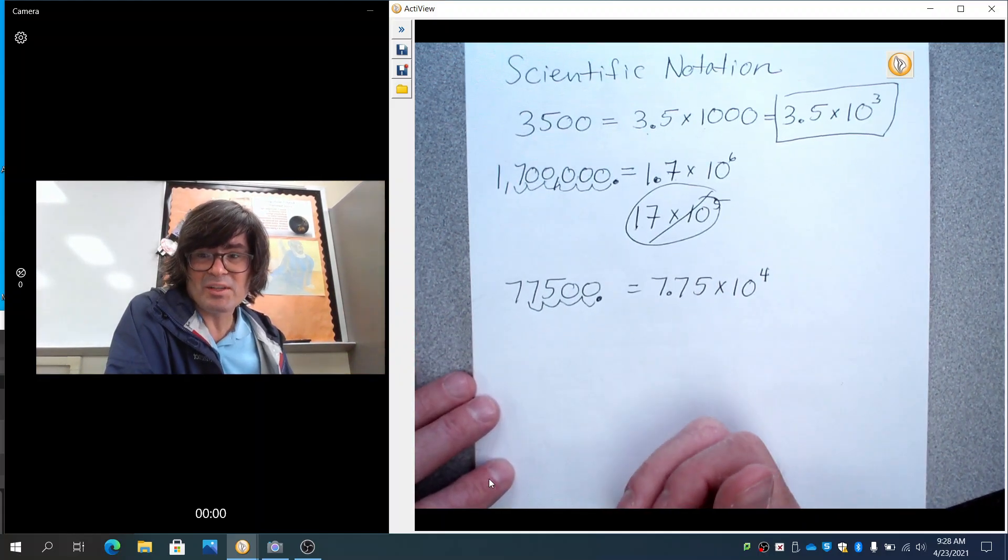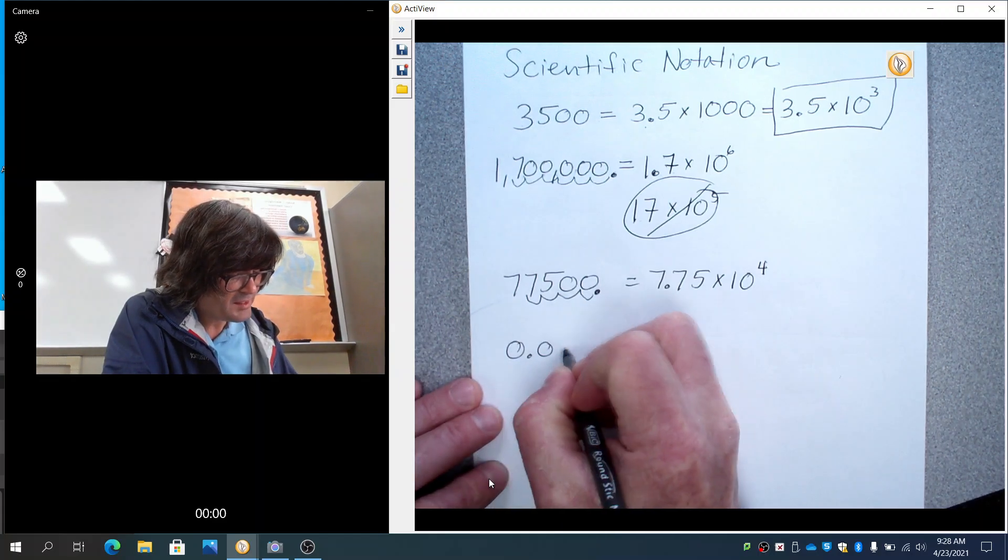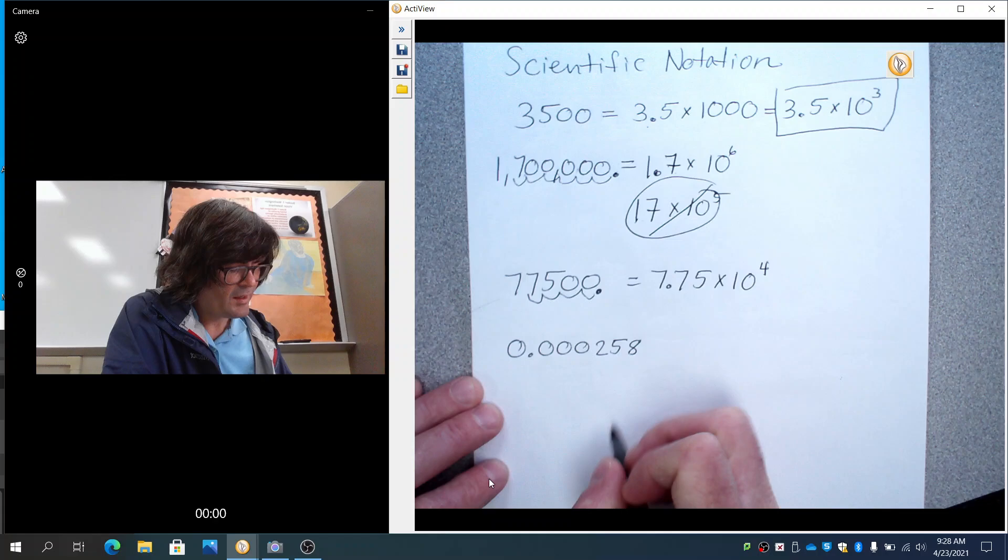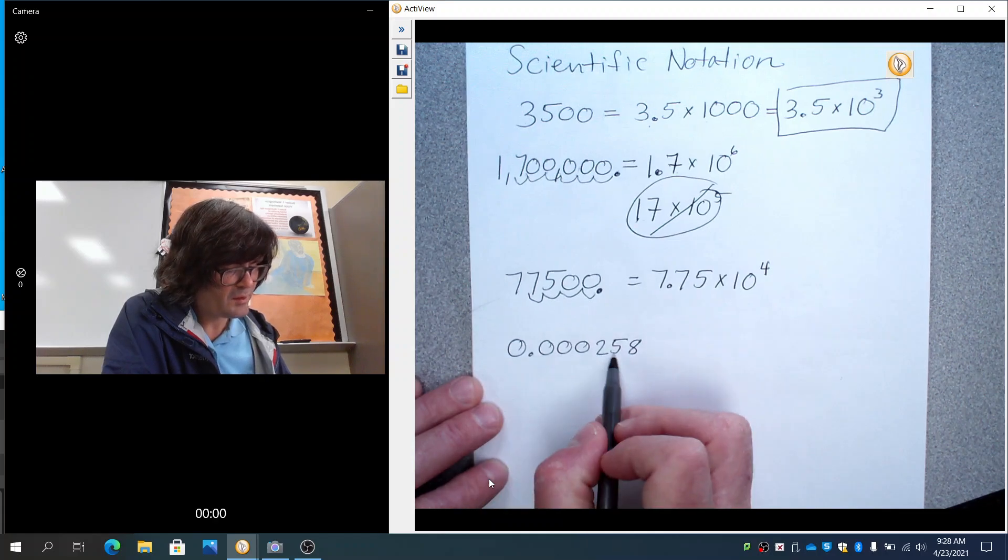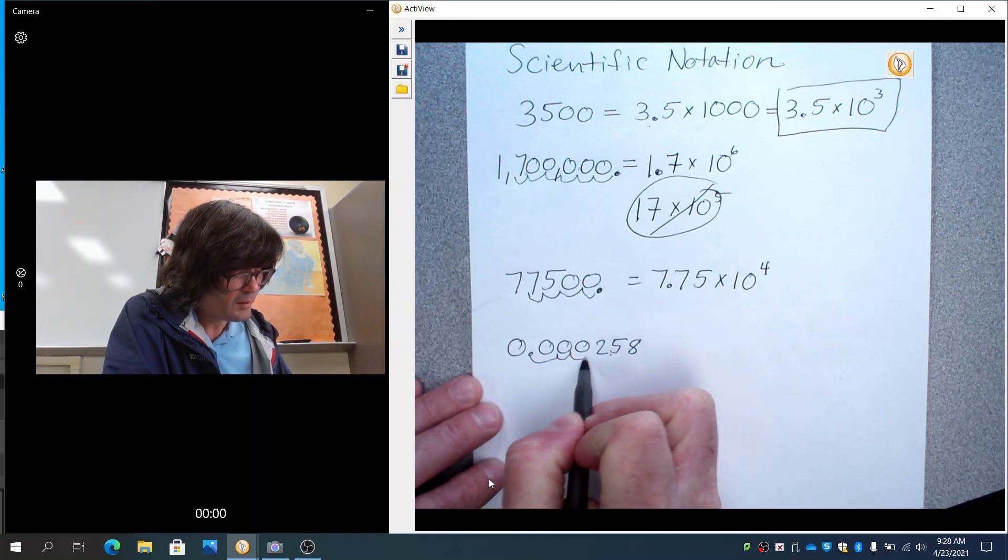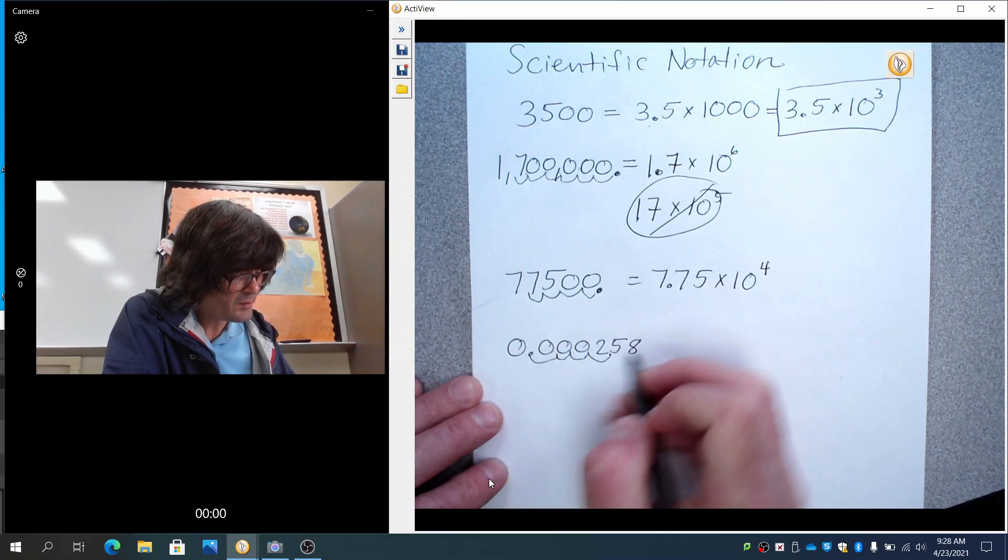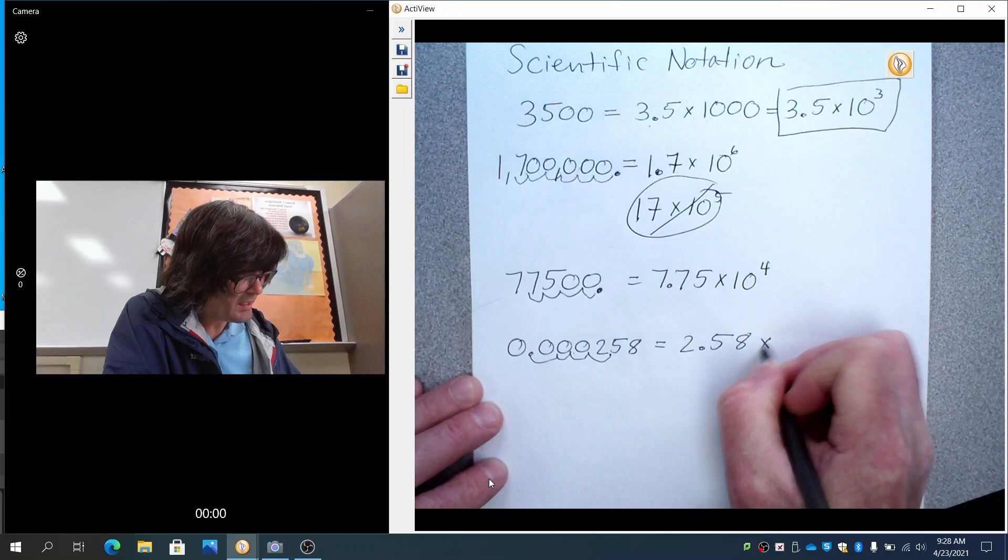Scientific notation can be used for really small numbers as well. For example, if you had .000258, you would have to move the decimal over to this position to get 2.58. You would move it over 1, 2, 3, 4 times. 1, 2, 3, 4 times. And this would now be 2.58 times 10 to the negative fourth.